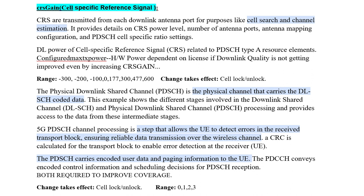The TX power depends on license or downlink quality. Even by increasing the CRS gain, downlink quality may not improve. The CRS gain value range is minus 300 to 600. Example values include: minus 300, minus 200, minus 100, 0, 100, 177, 300, 477, and 600. The CRS gain parameter change affects the scan value.